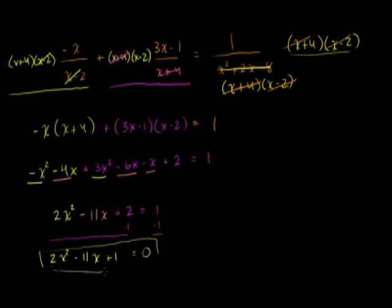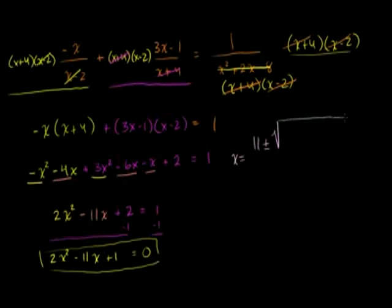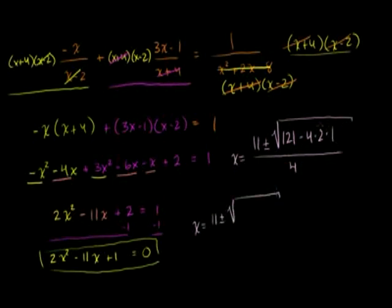Subtracting 1 from both sides gives 2x squared minus 11x plus 1 equals 0 — a standard quadratic equation. Using the quadratic formula: x equals negative b, which is negative negative 11, so positive 11, plus or minus the square root of b squared minus 4ac, which is 121 minus 4 times 2 times 1, all over 2a, which is 4. That simplifies to x equals 11 plus or minus the square root of 113, all over 4.